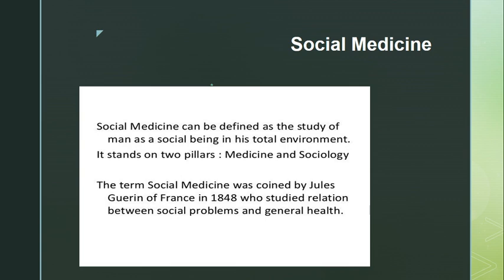Social medicine is the study of the manner in which disease may result from, or cause, or accentuate social problems, and how public health efforts may contribute to their solution. The social, cultural, psychological, and behavioral factors are important variables in social medicine — in the etiology, prevalence, and distribution of diseases. The way people live, their habits, beliefs, values and customs are significant determinants of individual and collective health.